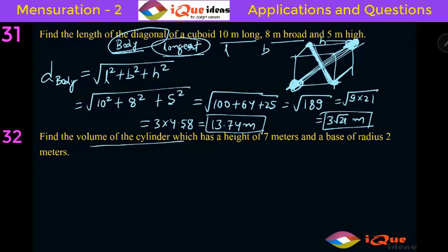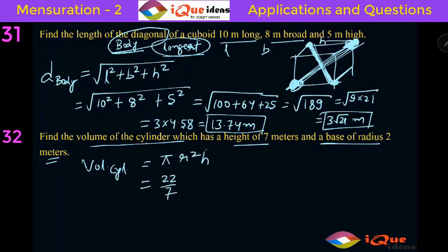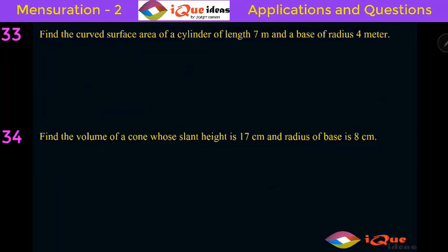Next question: the volume of a cylinder with height 7 meters and base radius 2 meters. Volume of cylinder is Pi R square H. Pi is 22 by 7, R is 2 meters, H is 7 meters. So 22 by 7 into 2 square into 7 — the 7s cancel, 2 square is 4, and 4 into 22 is 88 cubic meters.